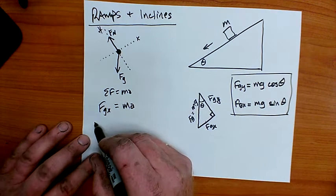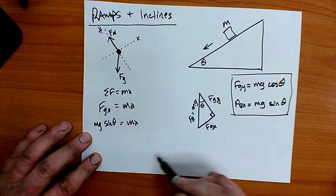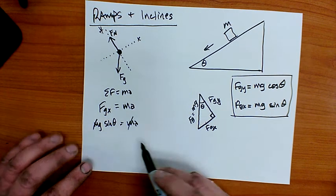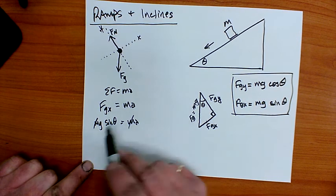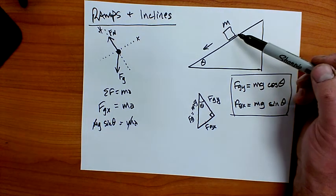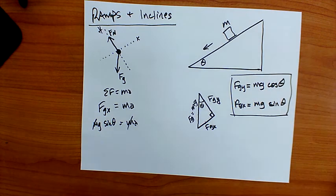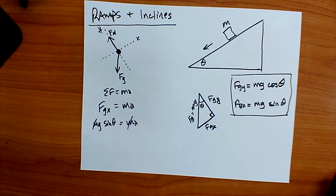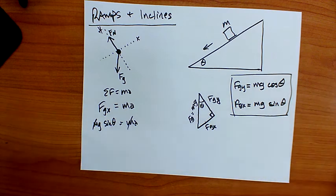If I plug fgx in: mg times sine of theta equals ma. Notice that the mass cancels out, and I get acceleration equals g sine theta. It's important to note that mass cancelled out — the angle and the acceleration of gravity affect the result, not the mass of the object itself. It's similar to how if you drop two objects, mg equals ma and mass cancels out.